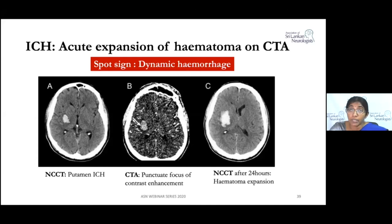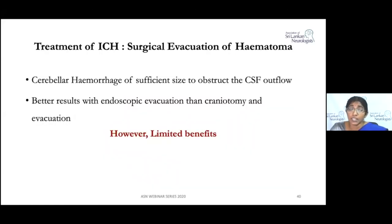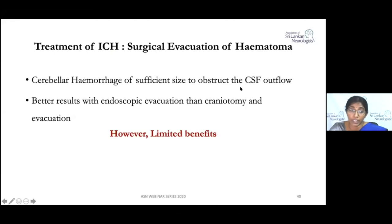Treatment for expanding hematoma includes prothrombin complex concentrate. Surgical evacuation is indicated for cerebellar hemorrhage of sufficient size — 3 cm in diameter — causing obstruction of the fourth ventricle and CSF flow blockage. Endoscopic evacuation has shown better results than craniotomy and evacuation, though the latest studies show limited benefit overall.